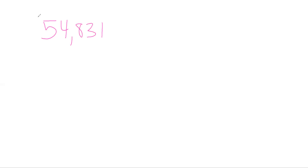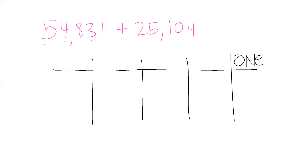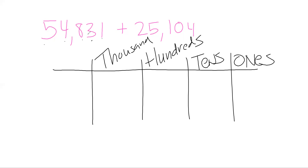Let's try another one. We'll do 54,831 plus 25,104. Think about that process — step one, build the place value chart. I've got five place values: ones, tens, hundreds, thousands, and ten thousands.